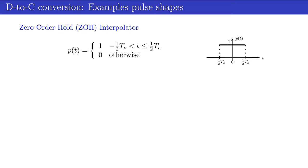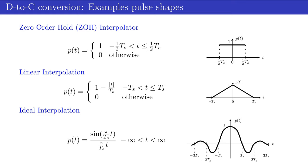For the zero-order hold, the pulse shape p of t is equal to 1 during ts second and 0 elsewhere. While for the linear interpolation, the pulse has a triangular shape with duration 2 times ts second. In the follow-up module, we will show that the ideal pulse shape is a sinc function, which has infinite duration.